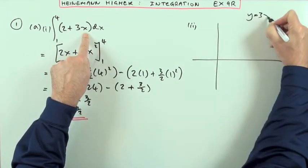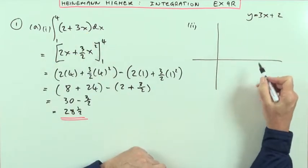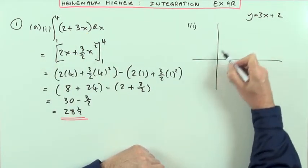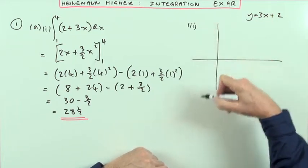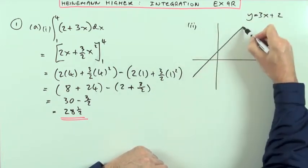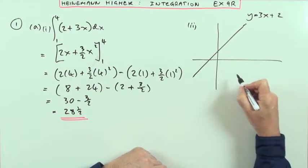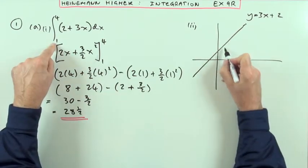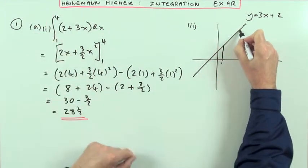y equals 3x plus 2 is easily identified as a straight line, which cuts the y-axis at 2 with a gradient of 3. I won't put a proper gradient of 3, it would fly off the page. So I'll just put it something like this. So that would be that line. It's the area between that curve and the x-axis from x equals 1 to x equals 4.